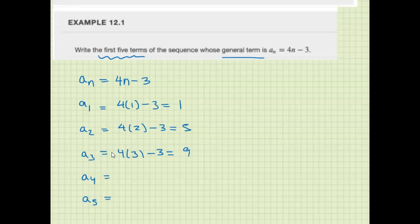4 times 4 minus 3, 16 minus 3, is 13. And 4 times 5 minus 3, 20 minus 3, is 17. So those are the first five terms in the sequence.